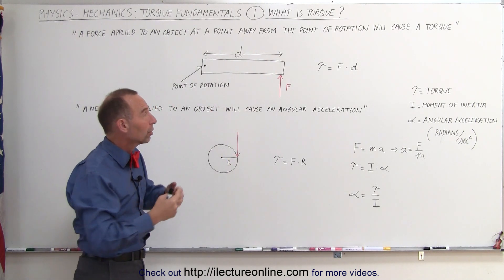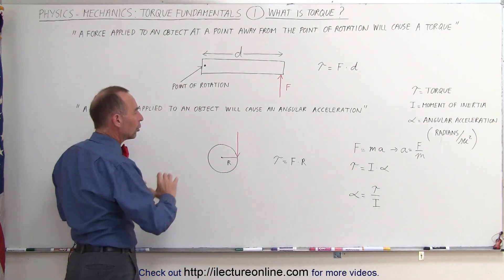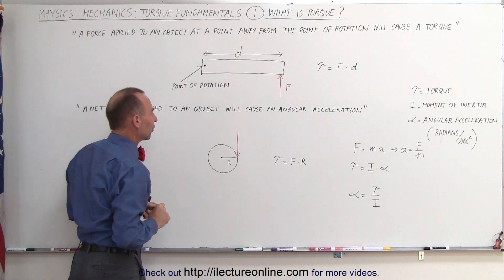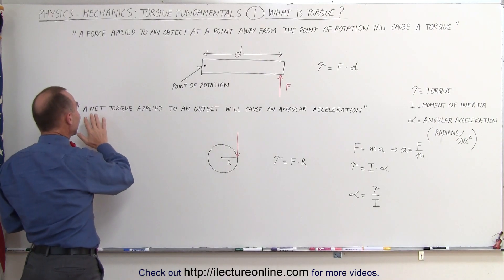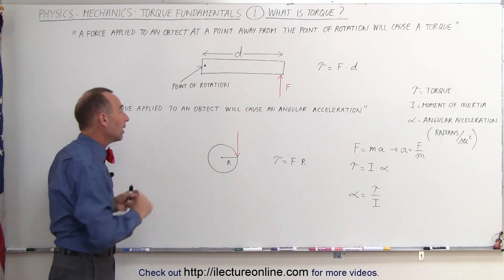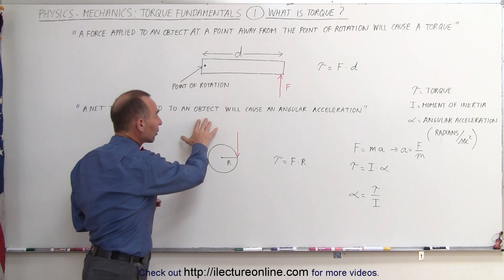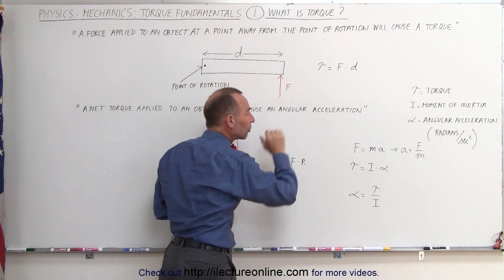The greater that torque, the greater the tendency for the object then to rotate. You can also have a force applied to a rotating disc, for example. It turns out that a net torque, so if you add up all the torques that are applied on an object and if you end up with a net torque, that net torque applied to an object will cause the angular acceleration.